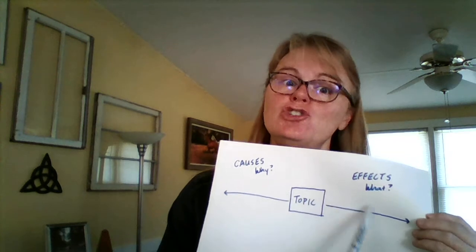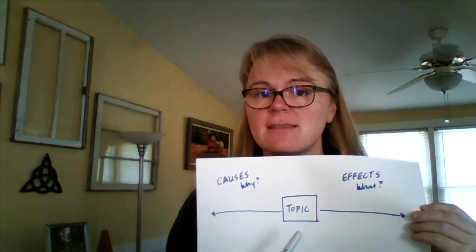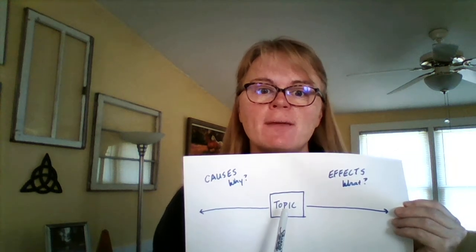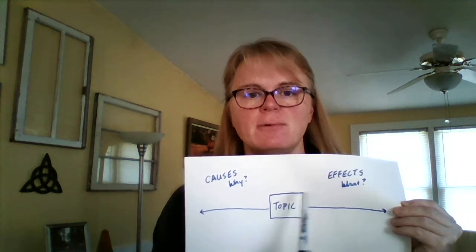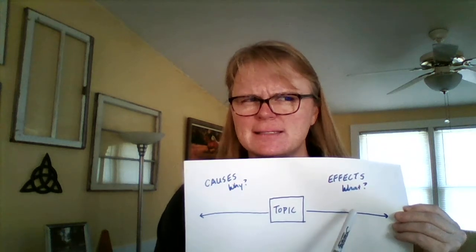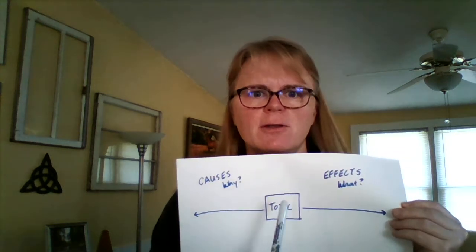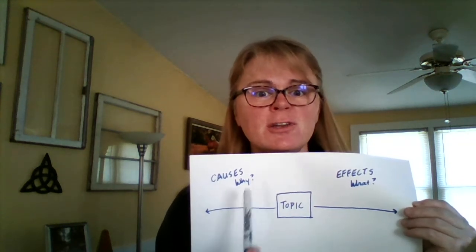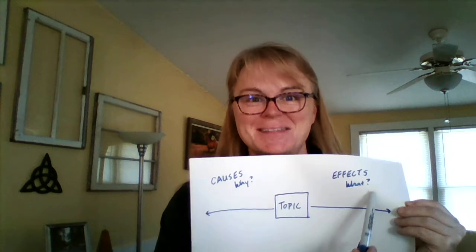Another way is to just do effects. The reading you're taking notes on this week has to do with language change and the fact that young women are often the generators of that language change. So I might ask, what are the effects of the way young women communicate with each other? One might be a change in grammar, a change in how things are sent over text messages or Snapchats, or the way friendship circles form. The third way is to do a combination — you can do it as a chain where this causes this, which causes this. Or you can present a couple of causes and a couple of effects.